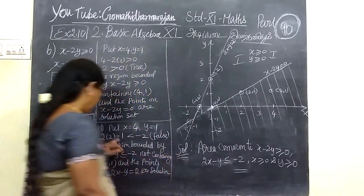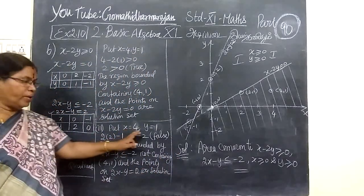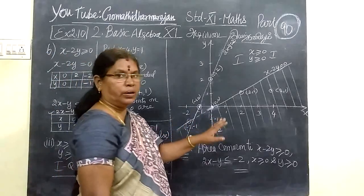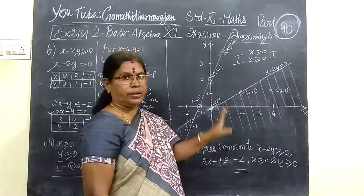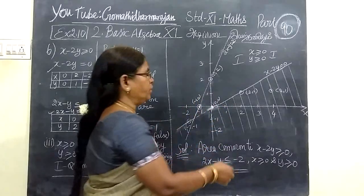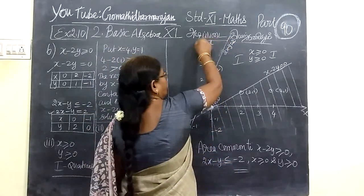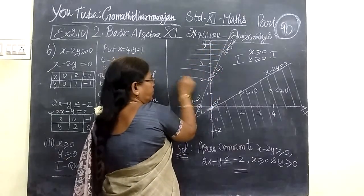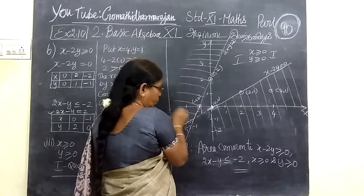Next, it is 4-1. The 4-1 doesn't contain the region. So, this is my first one and my first one is my first one. So, this is my first one. This is my first one.